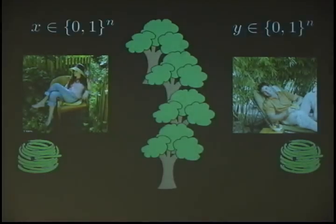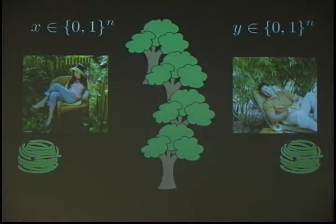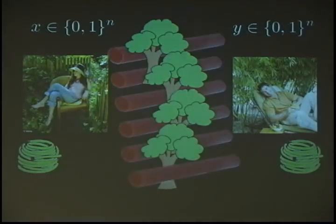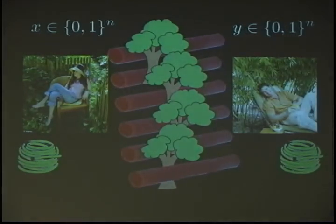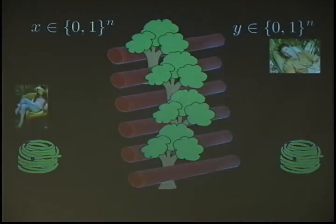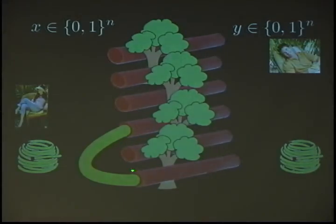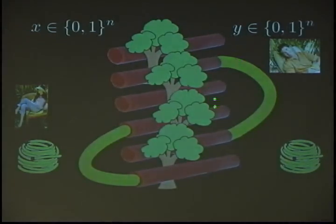So they both get some inputs. Alice gets an n-bit string X, Bob gets an n-bit string Y, and their goal is to compute a binary Boolean function. As it turns out, their gardens are connected by k water pipes. And what they can do is they can take their hose, and depending on the inputs, they can connect some of their ends of the pipes together. Notice there's only one-to-one connections allowed — no fancy stuff here. And Bob, he can do the same: he looks at his Y and he wires up some of his ends of the pipes.